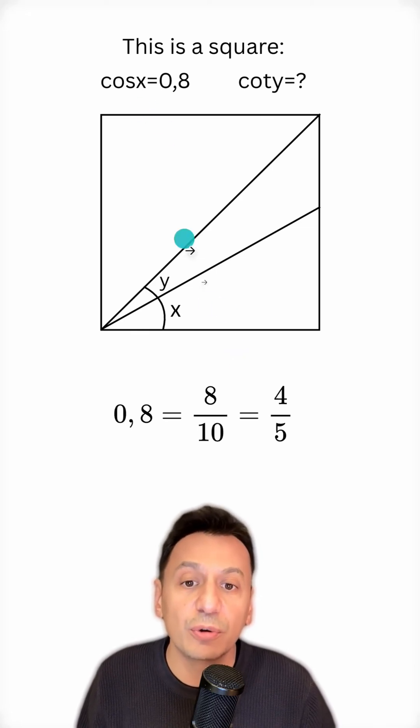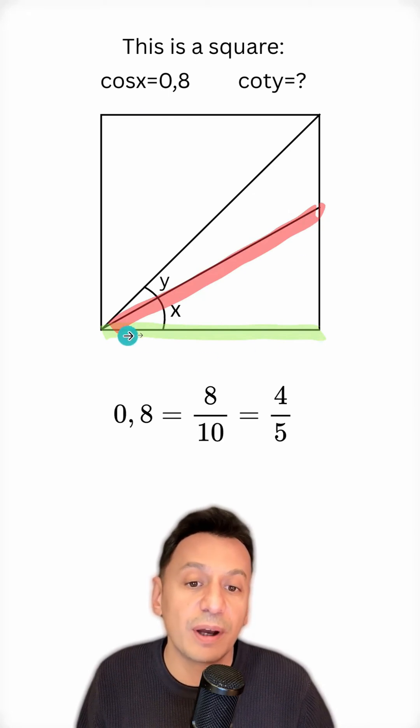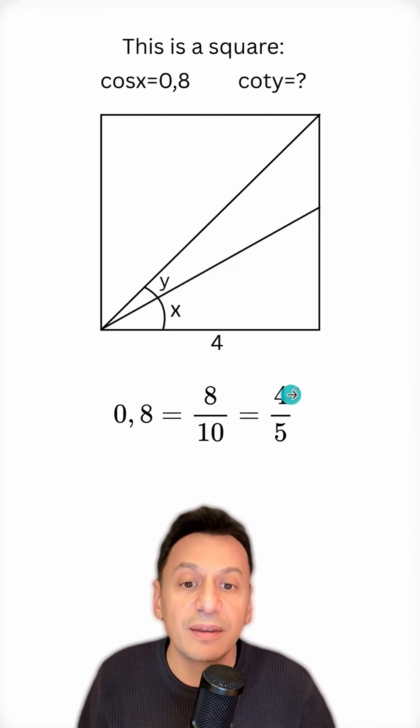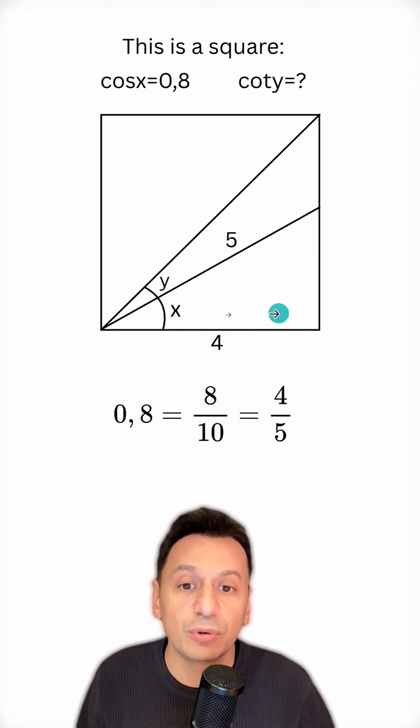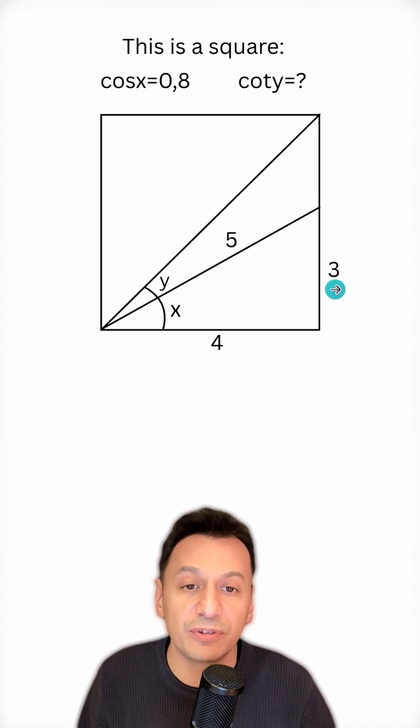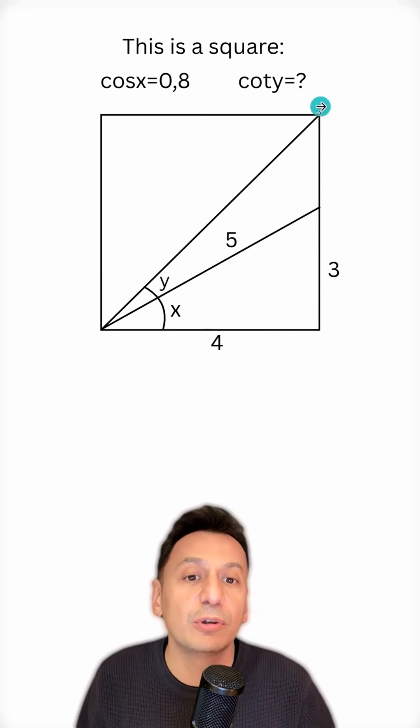But how am I going to do this? Cosine means the ratio of the adjacent side to the hypotenuse. So I can write 4 for the adjacent side here and 5 for the hypotenuse. Now using the 3-4-5 rule, I write 3 for the side opposite x.